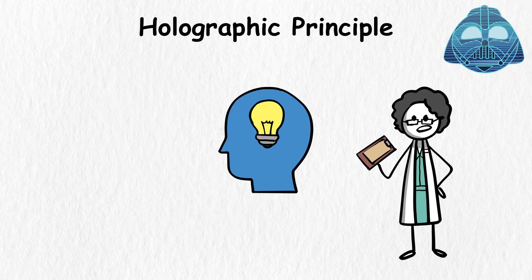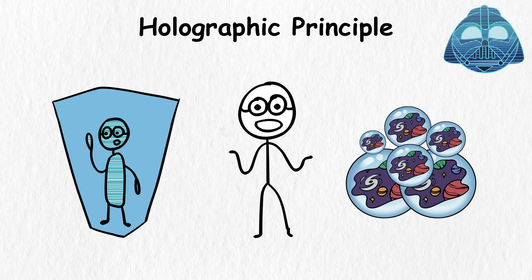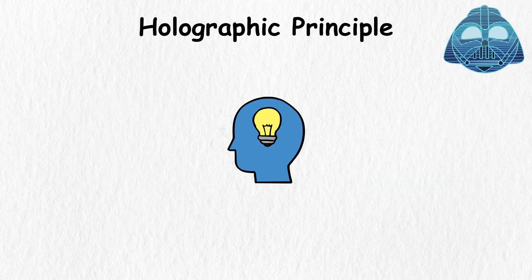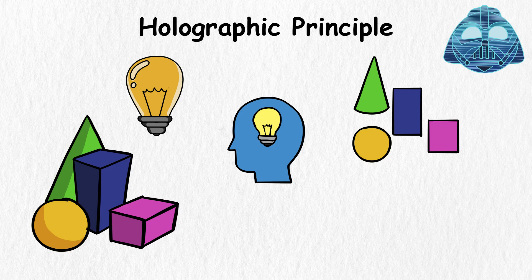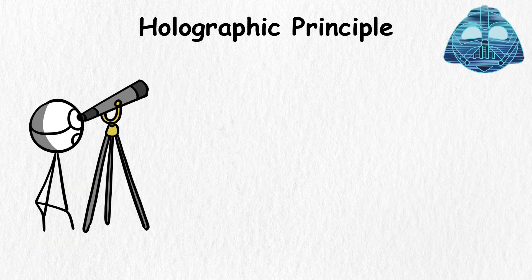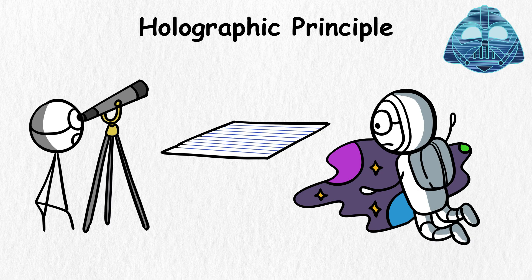Scientists apply the same logic to the holographic principle when understanding the existence of multiple universes. This theory suggests that all the information in our 3D universe can be represented on a 2D surface, which could be the universe's boundary. So if you're looking at our universe from the outside, it's like viewing it on a piece of flat 2D paper.